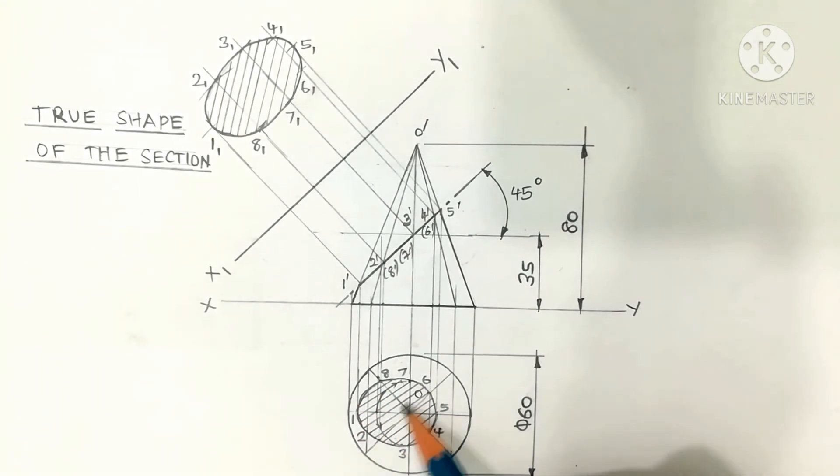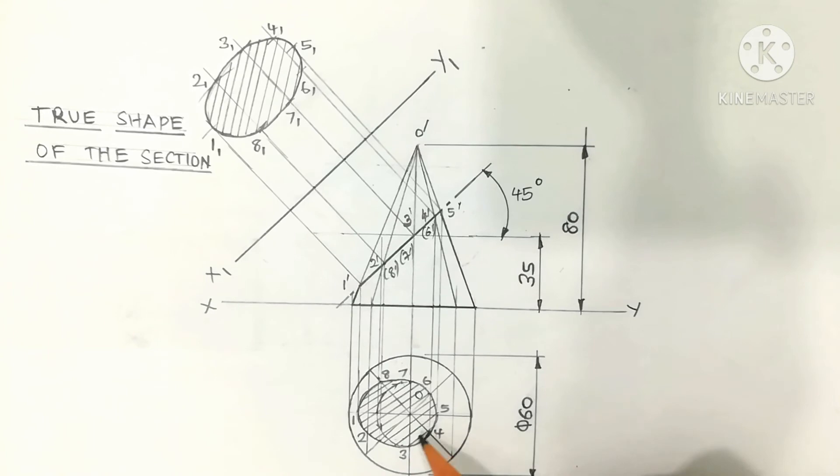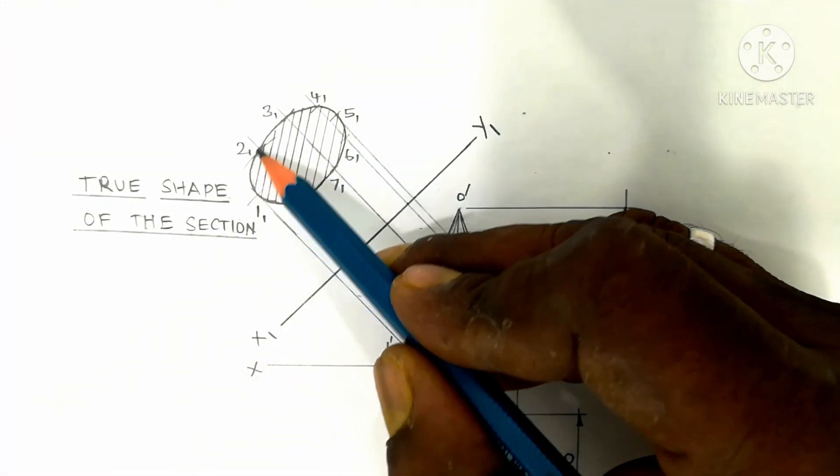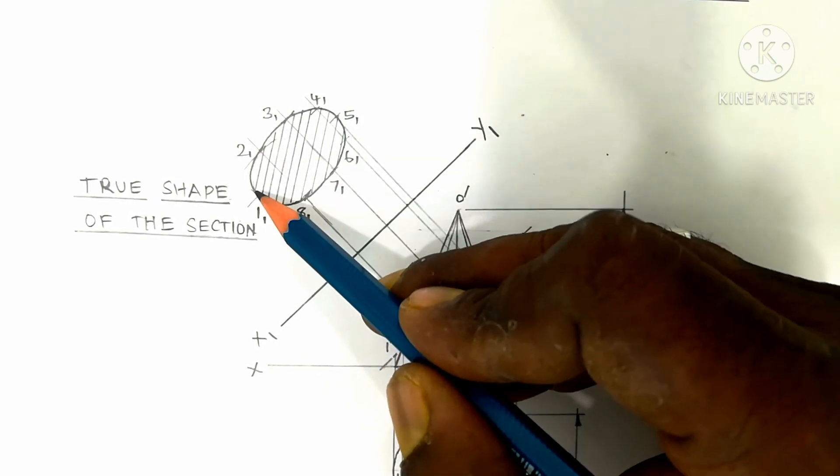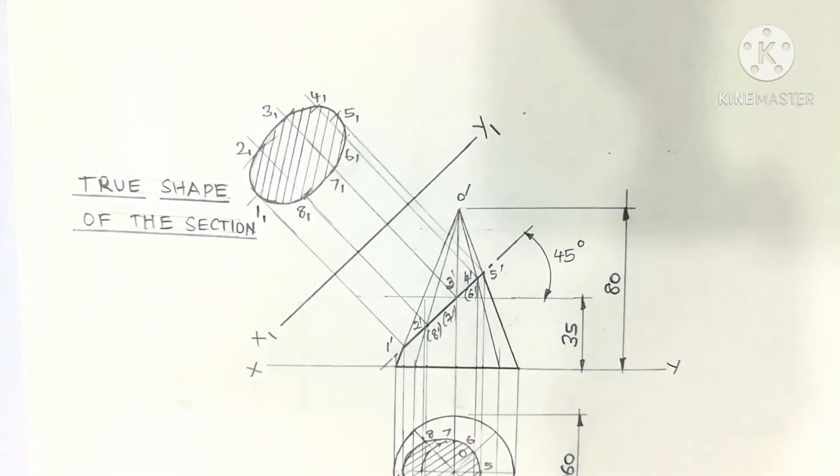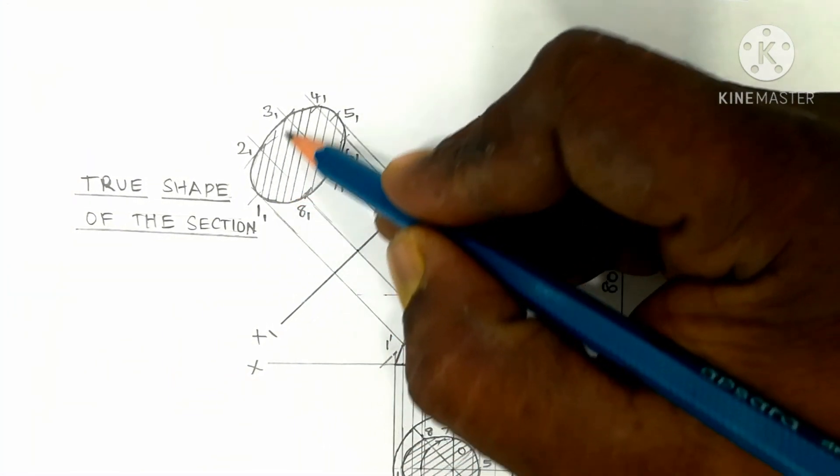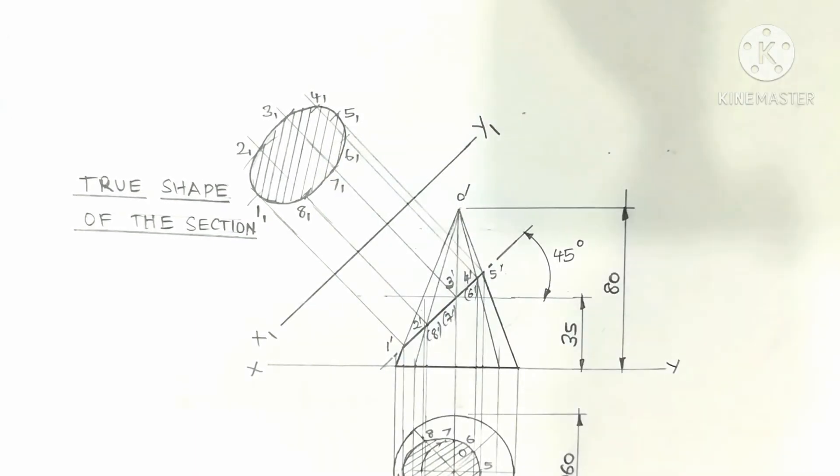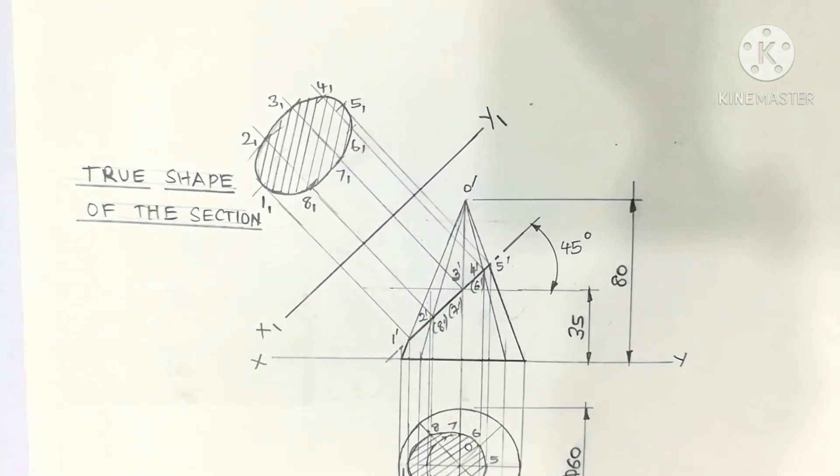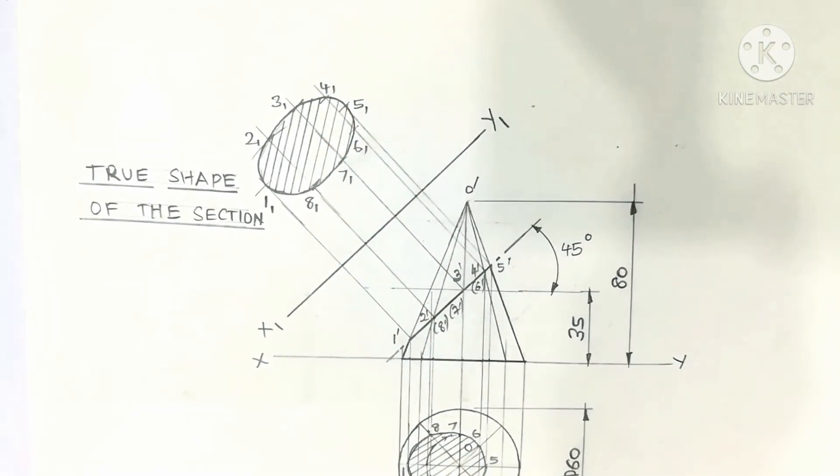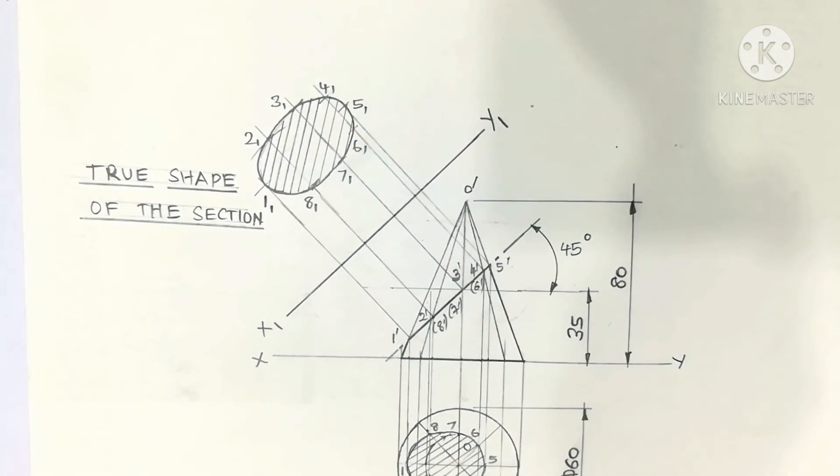The section lines are thin HB pencil lines. This inclined line is called section lines, inclined at 30 degree to 45 degree, any angle. The lines are drawn at regular intervals, gap between the parallel lines. Inclined parallel lines are of equal distance, some 2mm or 3mm gap between the parallel lines is maintained.